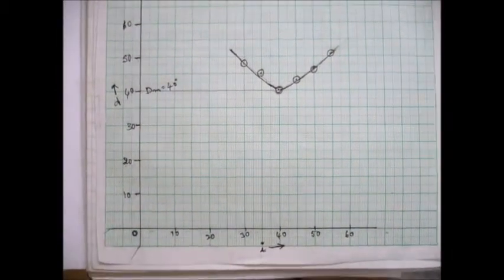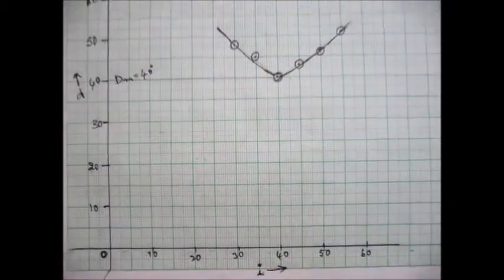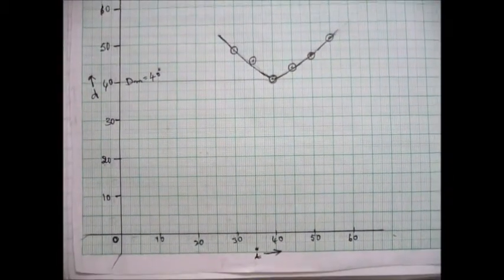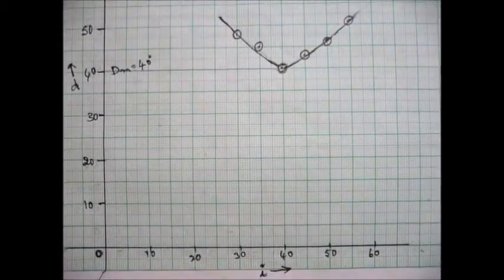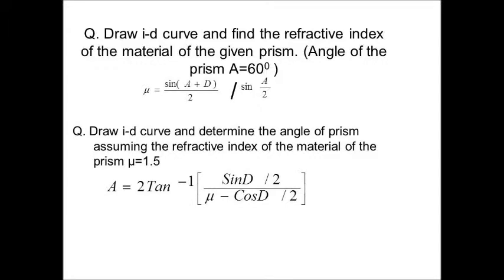Here we see the readings are taken by changing i-value and deviation on the y-axis. So, deviation is found to be 40 degrees here, and from that we are going to calculate the refractive index of the prism.